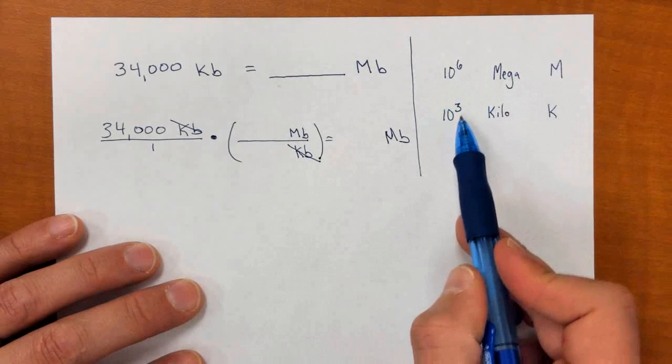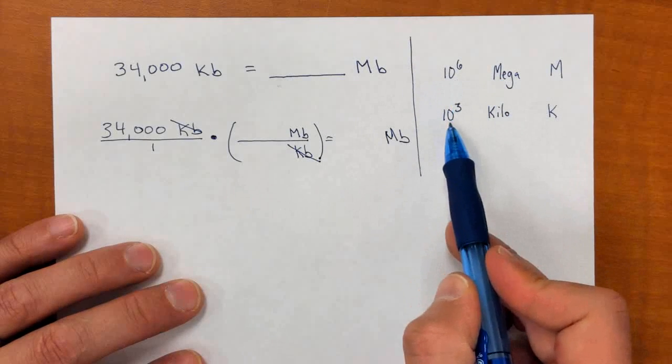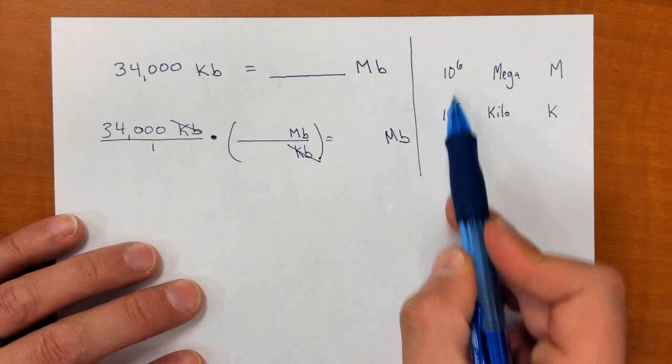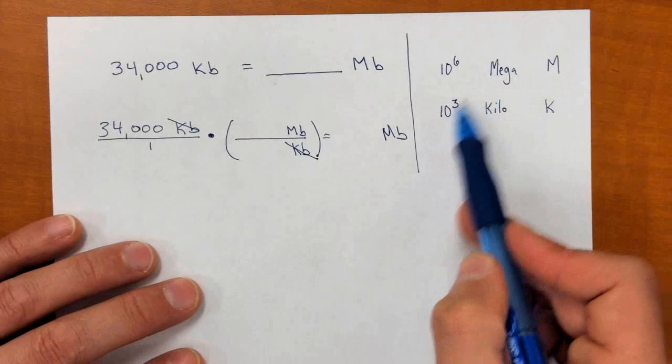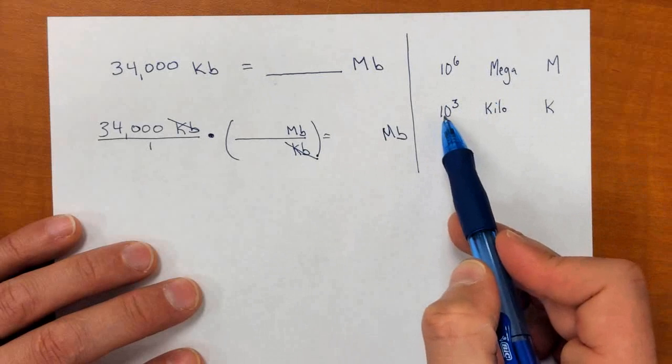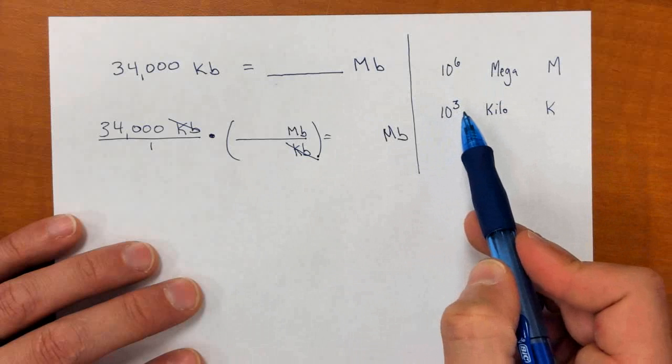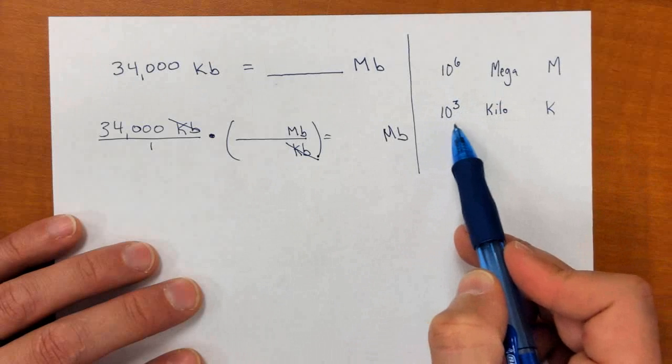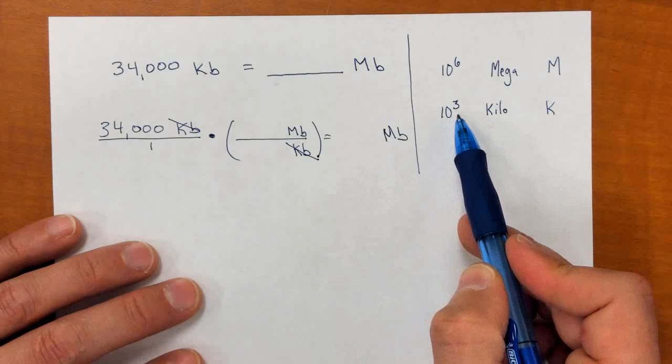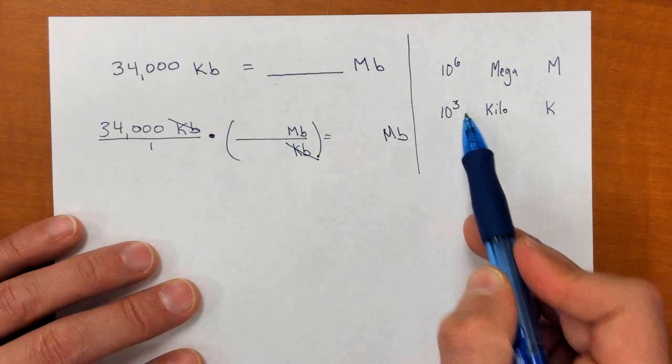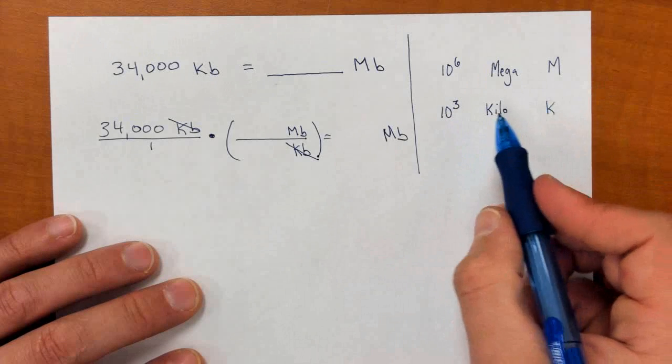How many powers of ten bigger is a megabyte than a kilobyte? Kilo is starting at ten to the third, and mega is ten to the sixth. That's three more powers of ten. Ten times ten times ten. We would go from ten to the third, with another ten, ten to the fourth, a second, ten to the fifth, and a third, ten to the sixth.